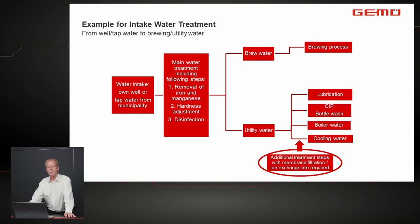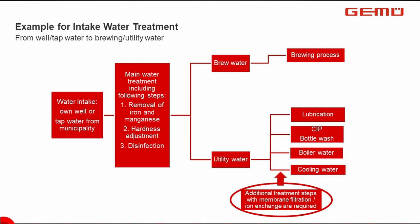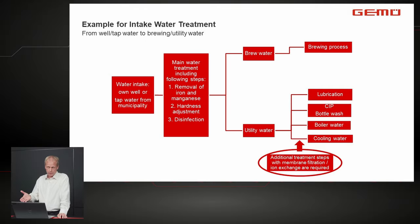Another example is water treatment for the beverage industry, specifically beer brewing. Starting from good-quality well or tap water, basic treatment covers removal of iron and manganese, hardness adjustment, and disinfection. One portion goes directly to the brewing process; the other is utility water that may receive additional membrane filtration or ion exchange treatment depending on its intended use.